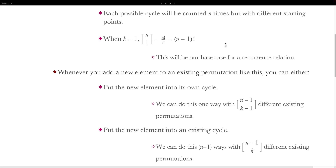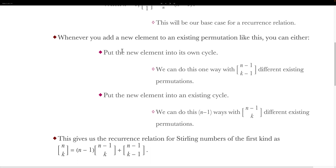This notation with the brackets is what we usually use for Stirling numbers of the first kind, and it's typically read out as 'n cycle k'. The case that [n cycle 1] equals (n−1) factorial will be the base case for our recurrence relation. We can think of [n cycle k] as a result of taking [n−1 cycle k−1] and [n−1 cycle k], because whenever you put a new element into an existing permutation, you can either put the new element into its own cycle — which we can do one way with [n−1 cycle k−1] different existing permutations — or put the new element into an existing cycle, which we can do (n−1) different ways with [n−1 cycle k] permutations. This gives us the recurrence relation: [n cycle k] = (n−1)·[n−1 cycle k] + [n−1 cycle k−1].